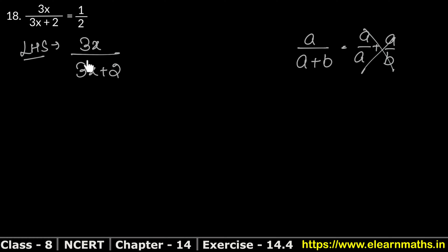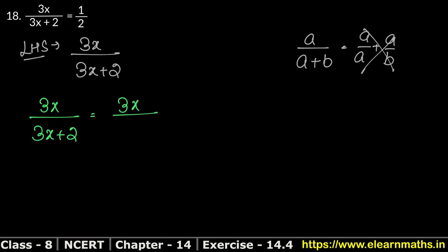So the right hand side we check: 3x upon 3x plus 2 does not simplify to 1 upon 2. Therefore 1 upon 2 will not come. This is our answer.